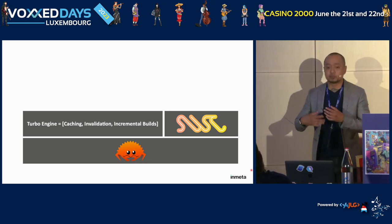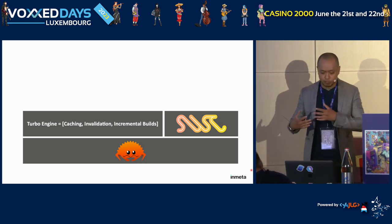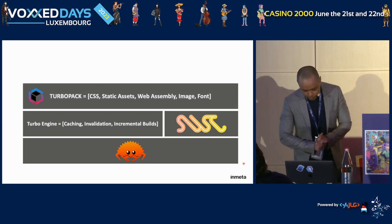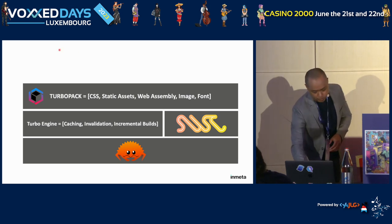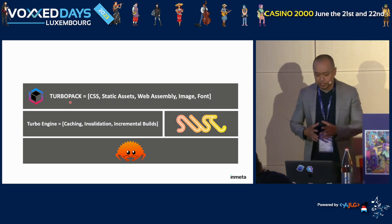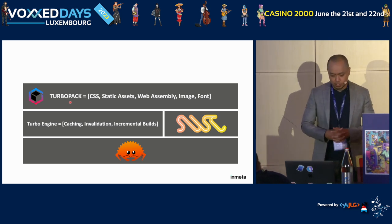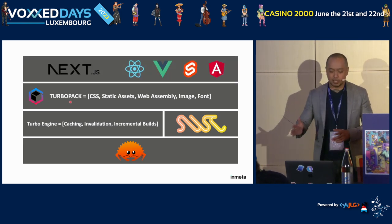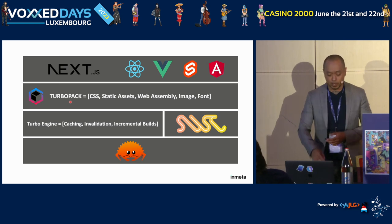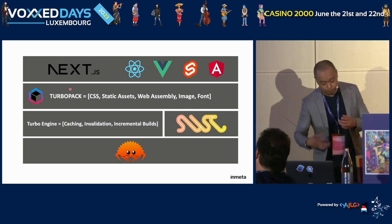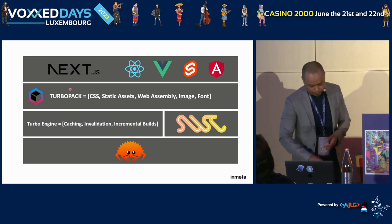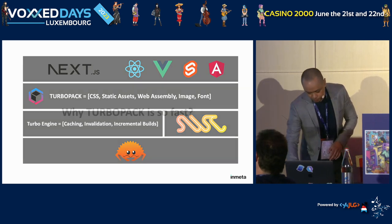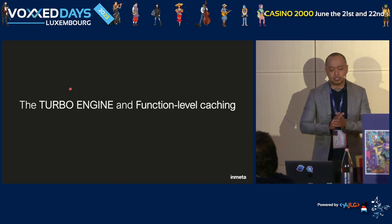SWC is a modern transpiler built in Rust that replaces Babel and is 20 times faster. The Turbopack bundler itself handles CSS, static assets, WebAssembly, images, fonts, and more — leveraging SWC. Next.js and other frameworks can use Turbopack as their bundler. Right now Turbopack supports Next.js, but the plan is to also support other JavaScript frameworks and libraries.